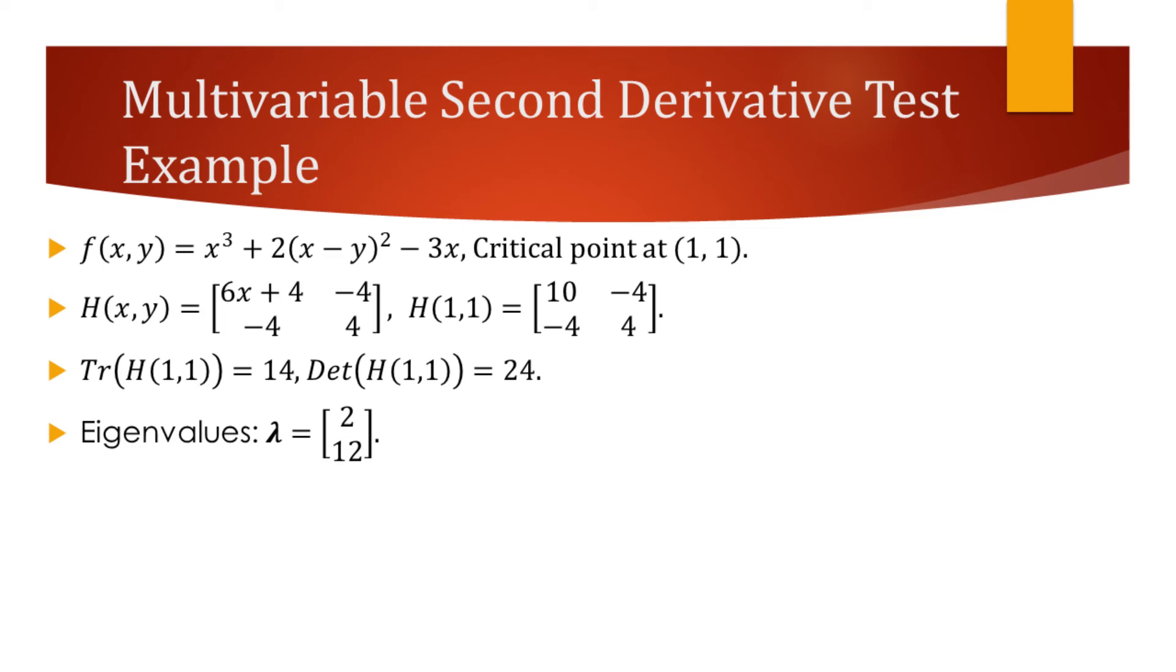Definiteness of a matrix is determined based on its eigenvalues. The trace of this Hessian is 14, and the determinant is 24. Eigenvalues need to be such numbers that add up to 14 and multiply to 24. 2 and 12 are such numbers.